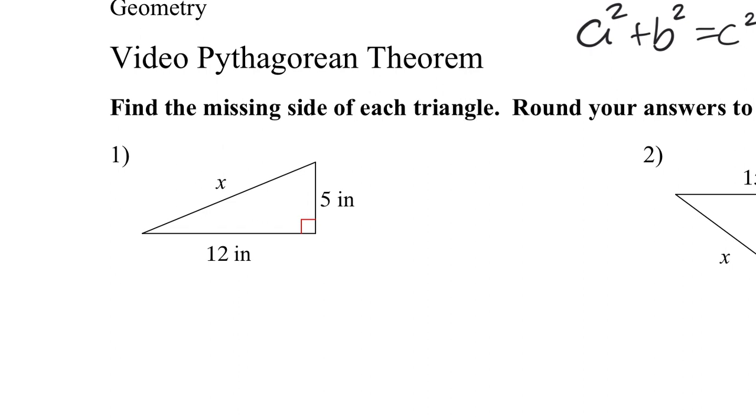The first one, I know that my hypotenuse is X because it's opposite to the 90 degree angle. That means I got 12 squared plus 5 squared equals X squared. So I got 144 plus 25 equals X squared. 144 plus 25 is 169. And then the square root on both sides. That means X equals 13.